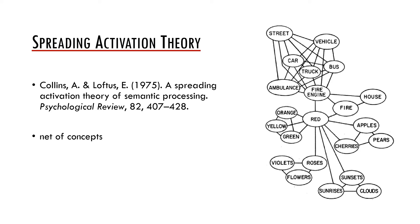The authors viewed the mental lexicon as a net of concepts which are interconnected based on their semantics. The main idea was as follows: when a certain node is activated, which happens when we are retrieving the word from memory, it also partially activates the nodes which are connected with this node. In other words, if the word 'red' is activated, it automatically activates also words like orange, fire, cherry, sunrise, rose, and so on.